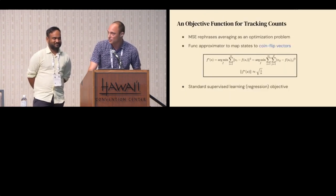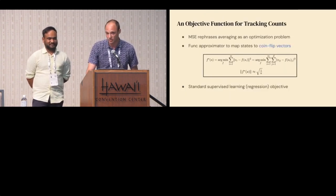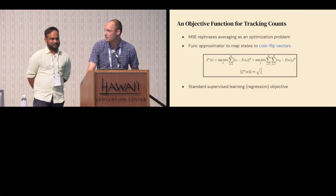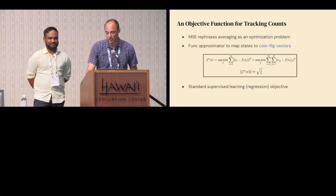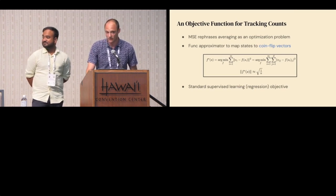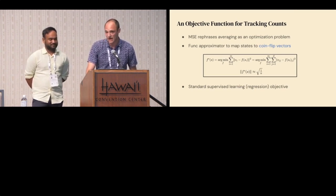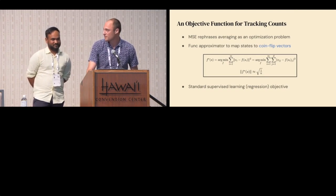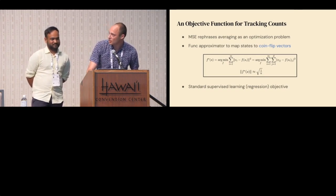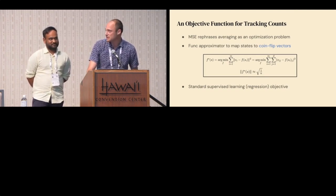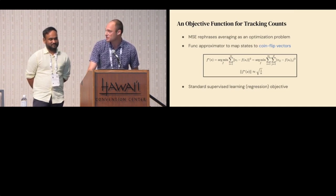In summary, we've set up a simple regression problem between observations and random coin flip vector labels. When we train our function approximator thoroughly, we can use the magnitude of its output as a pseudo count bonus. You can look to the paper to see the math for this, as well as an analysis in the linear function approximation case.